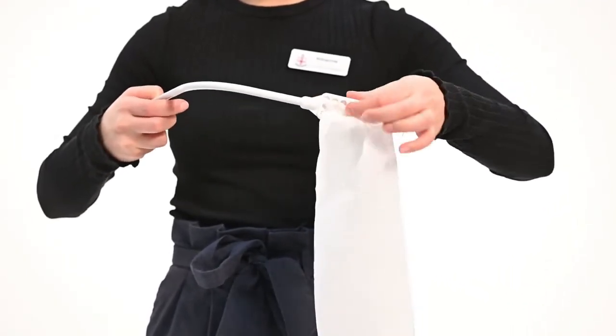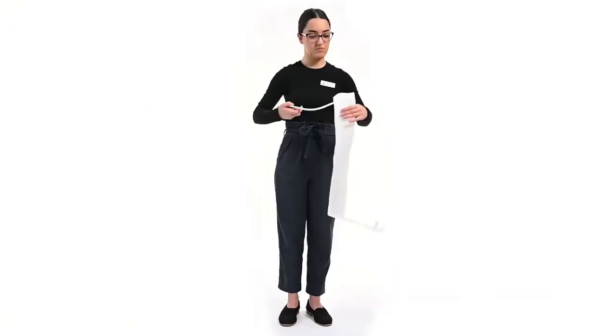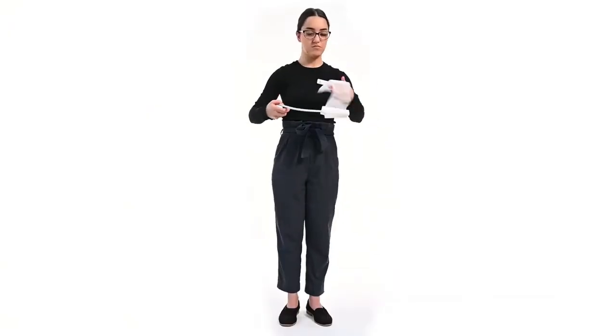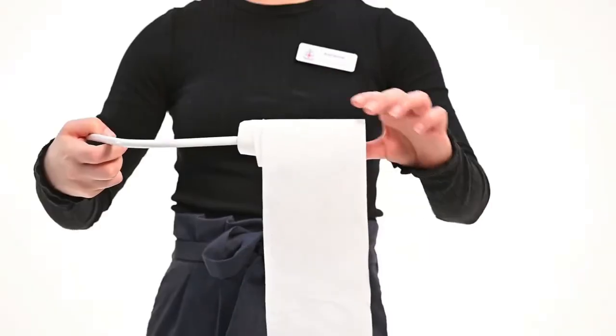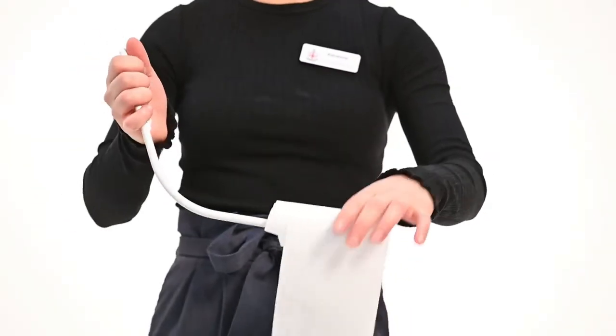Wrap the toilet paper around the triangular end. Then you are ready to wipe, either reaching behind or through the front if that is more achievable.